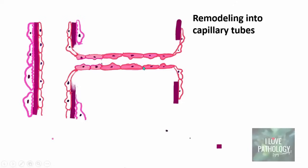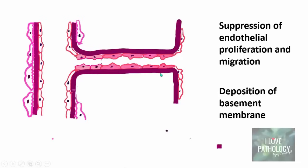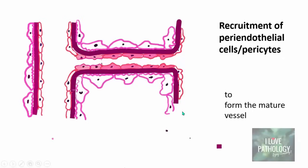Initially these capillaries are immature, containing only endothelial cells without a supporting basement membrane. Later they mature with deposition of a basement membrane. Maturation is brought about by platelet-derived growth factor and transforming growth factor beta, which also recruit pericytes. The presence of pericytes and basement membrane is what makes a blood vessel a mature capillary. This is how angiogenesis takes place — formation of new blood vessels from pre-existing blood vessels.